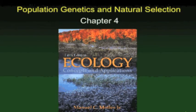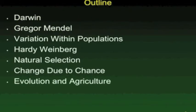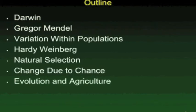Welcome to Chapter 4, where we'll be talking about population genetics and natural selection. During Chapter 4, I'll be talking about Darwin and Gregor Mendel and how their work interacted to explain some of the variation we see within populations. We'll talk about the Hardy-Weinberg formula and natural selection, the changes that result from that, and then the impact of microevolution on agriculture and our use of things like pesticides.